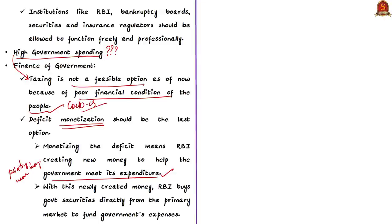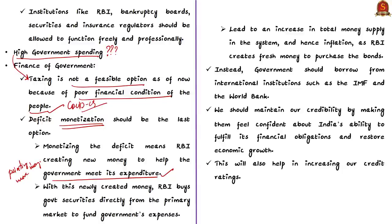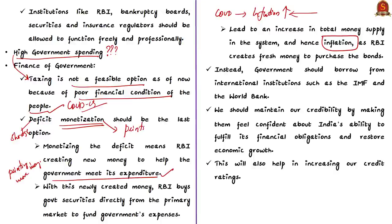Deficit monetization will lead to an increase in total money supply, which leads to inflation. There is already inflation due to COVID-19, and this may worsen if the deficit is monetized. To clarify: deficit means a shortage of money, monetization means printing new money, so deficit monetization means printing new money to fill that deficit.